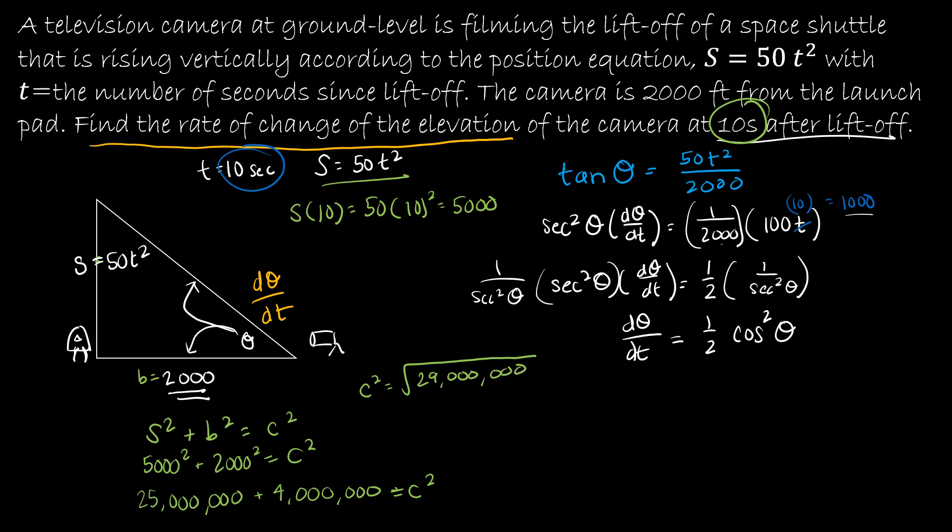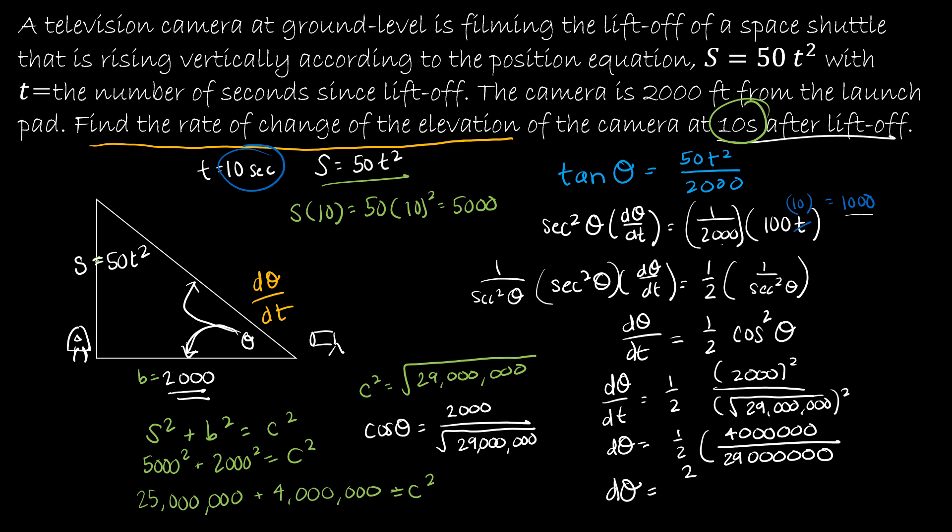What I can do now is say dθ/dt = (1/2)·cos²(θ). Cosine of theta would be 2000 over √29,000,000. I'm going to take that squared: 2000² over (√29,000,000)². The square root and square cancel out, so this is (1/2)·(4,000,000/29,000,000), which reduces to 2/29.